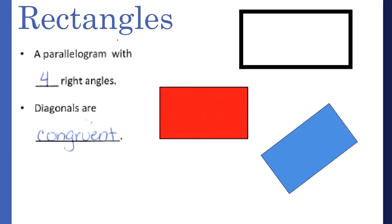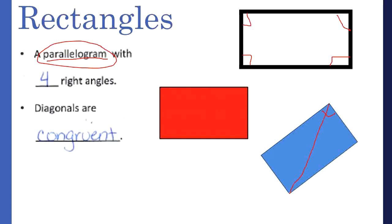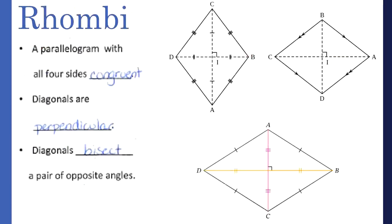Moving on to rectangles: a rectangle is a type of parallelogram and has four right angles. Sometimes only one angle is marked, but you know the rest must also be right angles. Because it's a type of parallelogram, it has all the same parallelogram properties. Additionally, the diagonals of a rectangle are congruent — the length from one corner to the opposite corner equals the other diagonal.